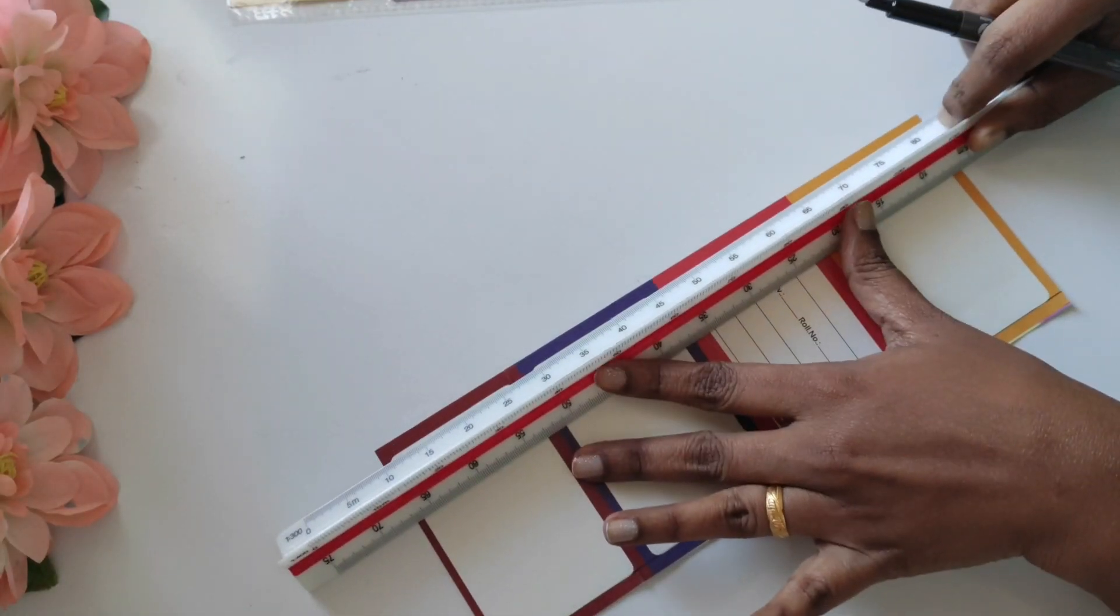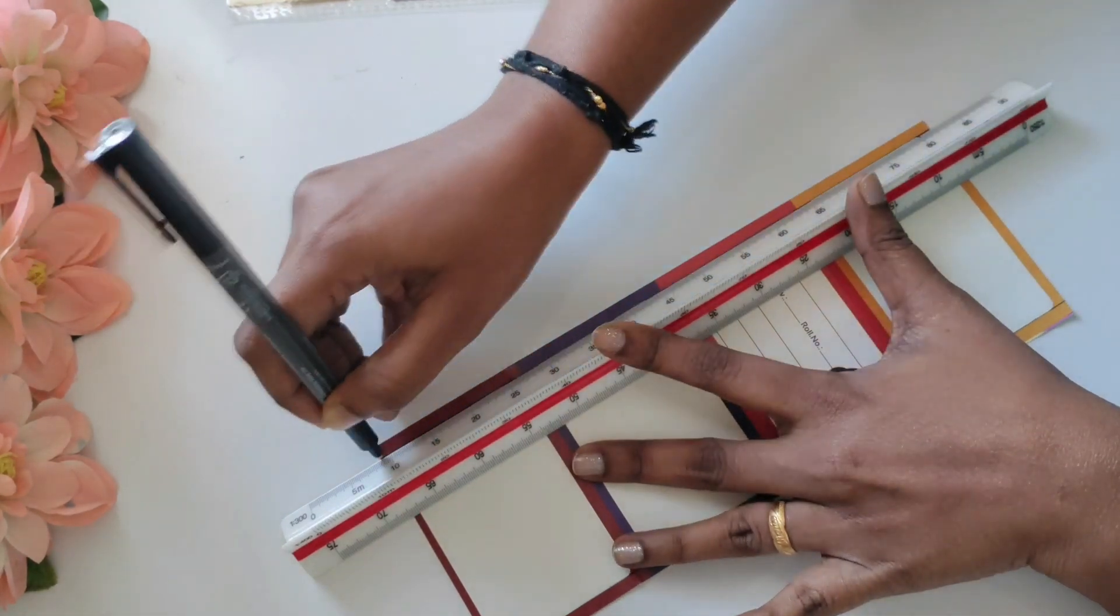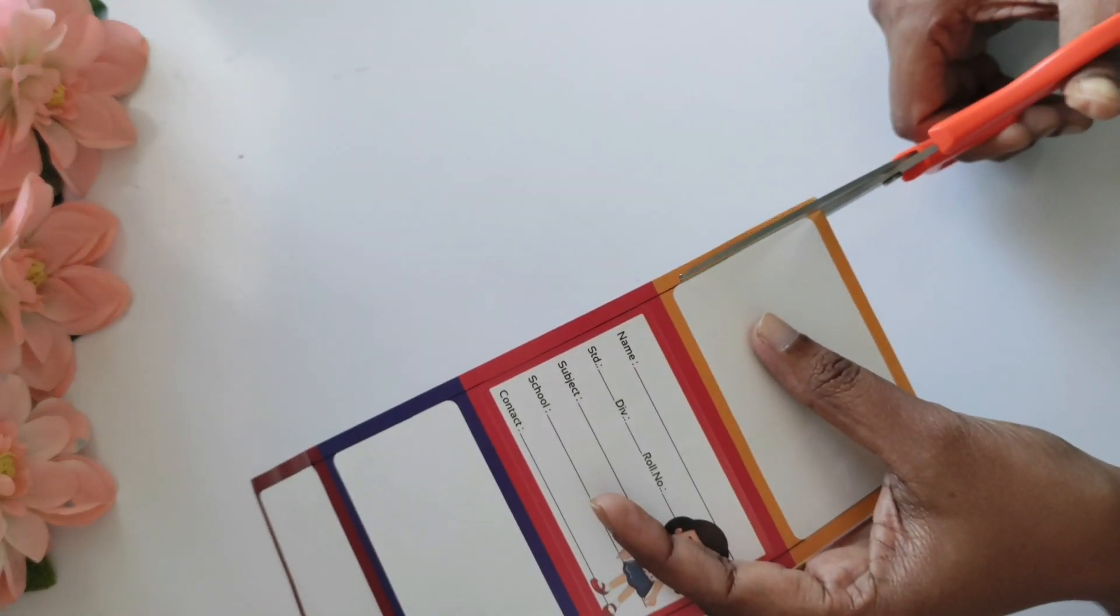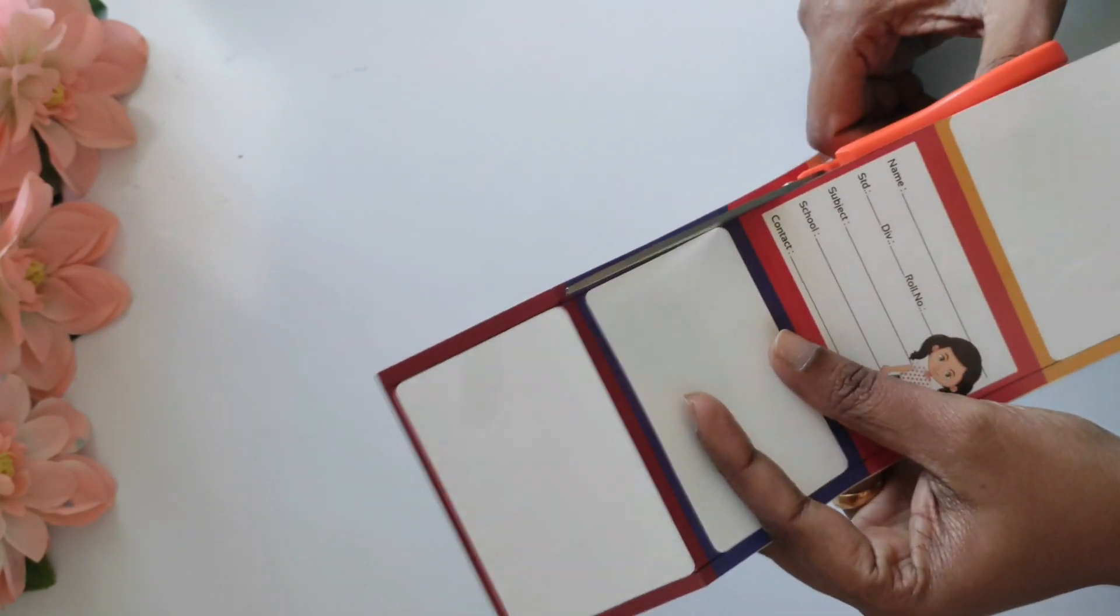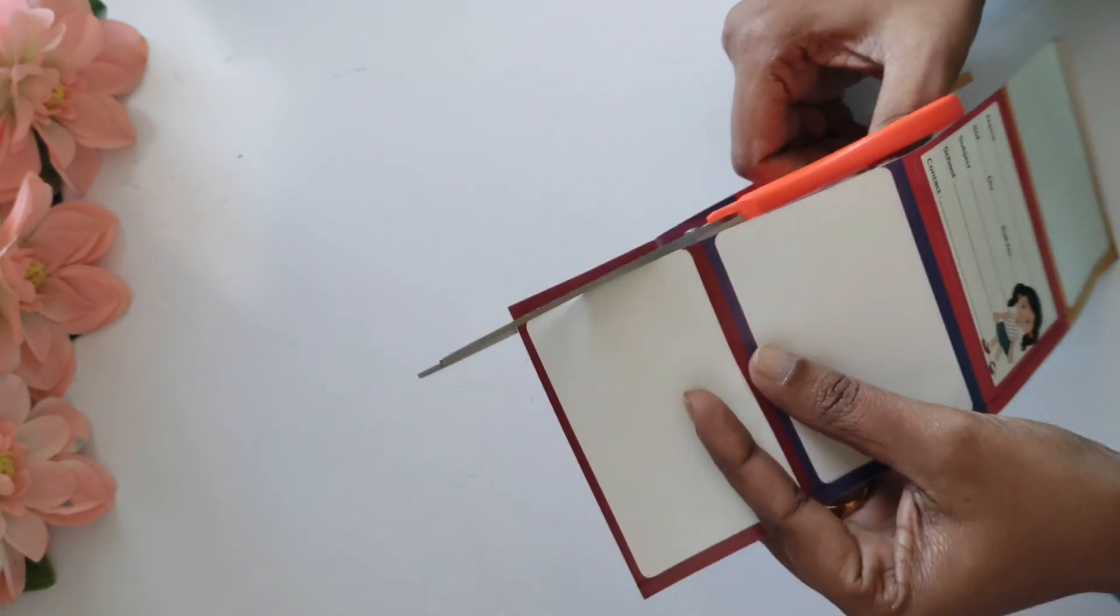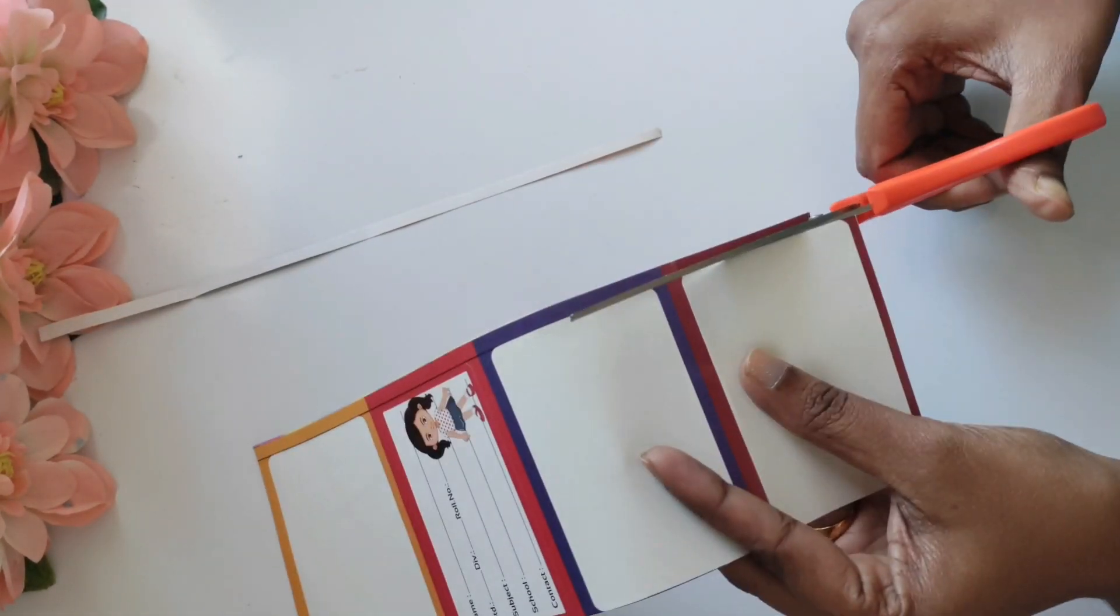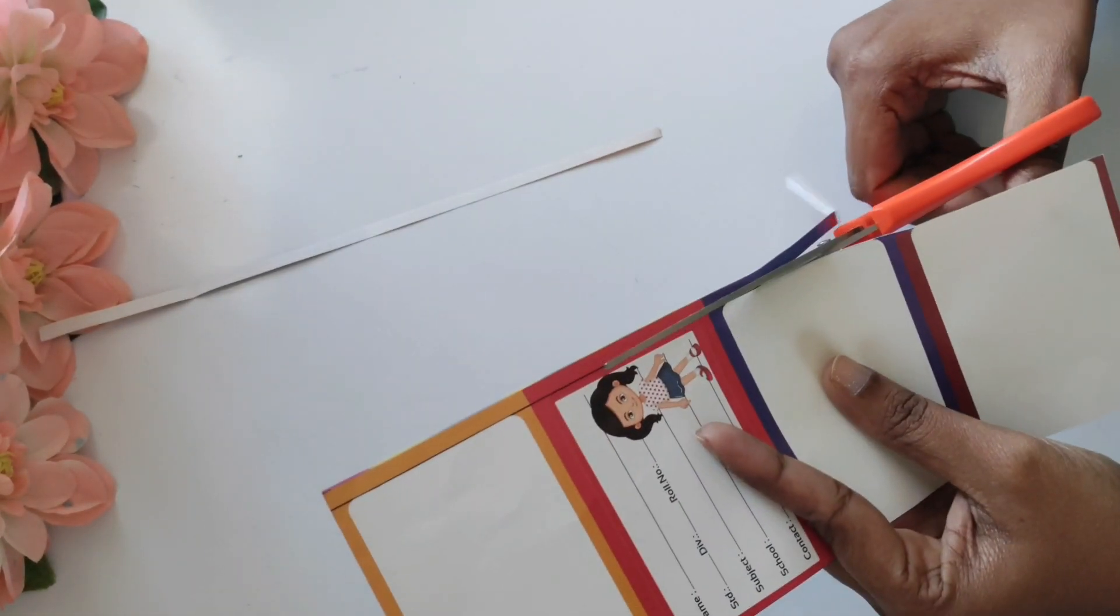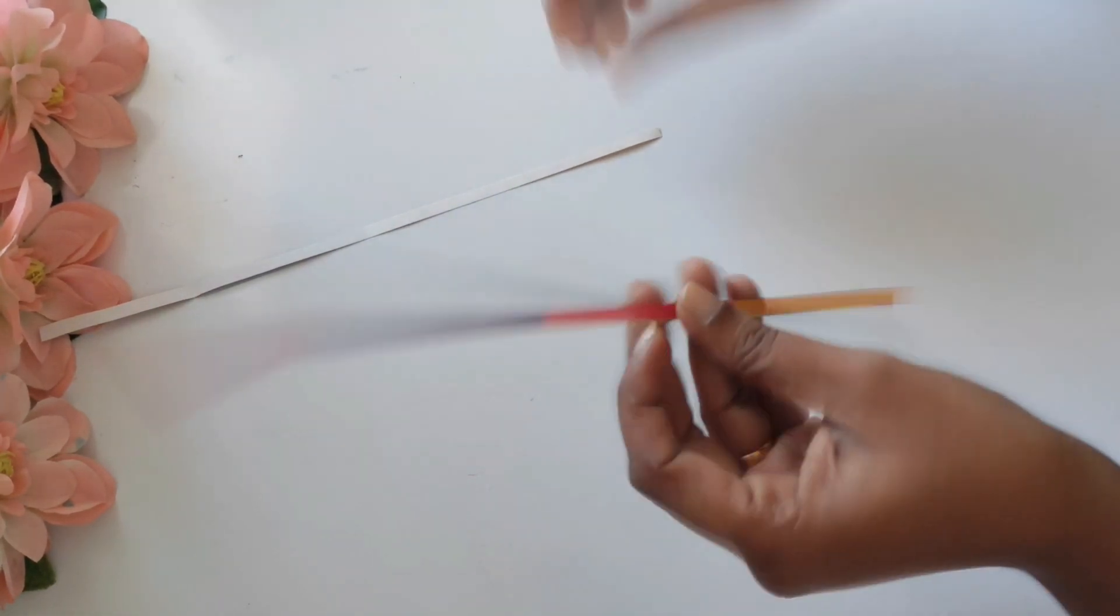Here I'm taking a ruler and drawing a straight line, and now cutting through that line. You will get a sticker piece like this. The same way, I'm cutting the other side as well to get two strips.